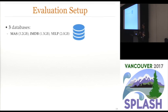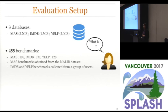We evaluated our approach across multiple databases since our goal is to be database agnostic. In particular, we looked at the MAS database, the IMDB movie database, and Yelp, the business reviewing database. For each database we collected over 100 benchmarks. The queries for the MAS database come from the Nullier dataset — Nullier is a tool that addresses the same problem and won a best paper award at VLDB 2014.